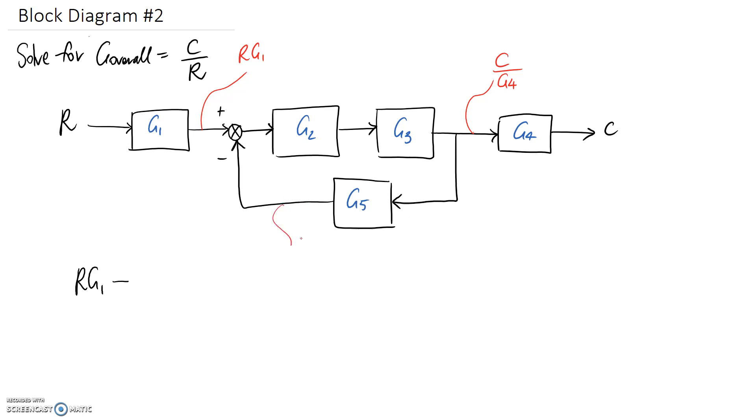So the signal on this side is going to be what we have which is c on g4 and now it needs to be multiplied by what's inside the block which is g5. So that's what's going in to the summing junction. So that's what needs to be negative. So we're going to have c g5 divided by g4. So that's what's now here.